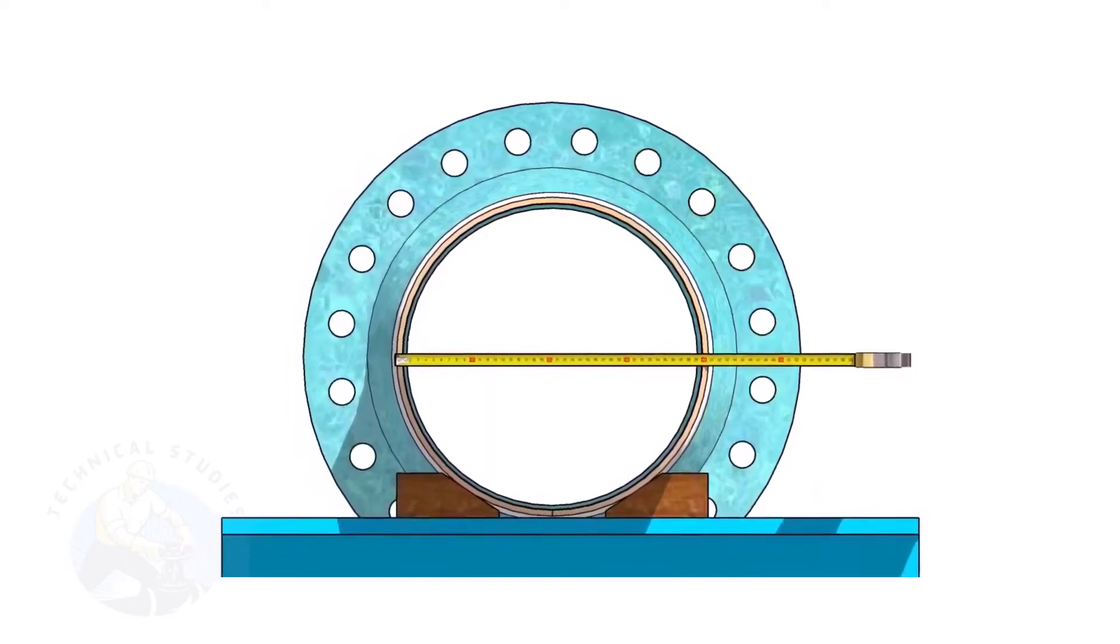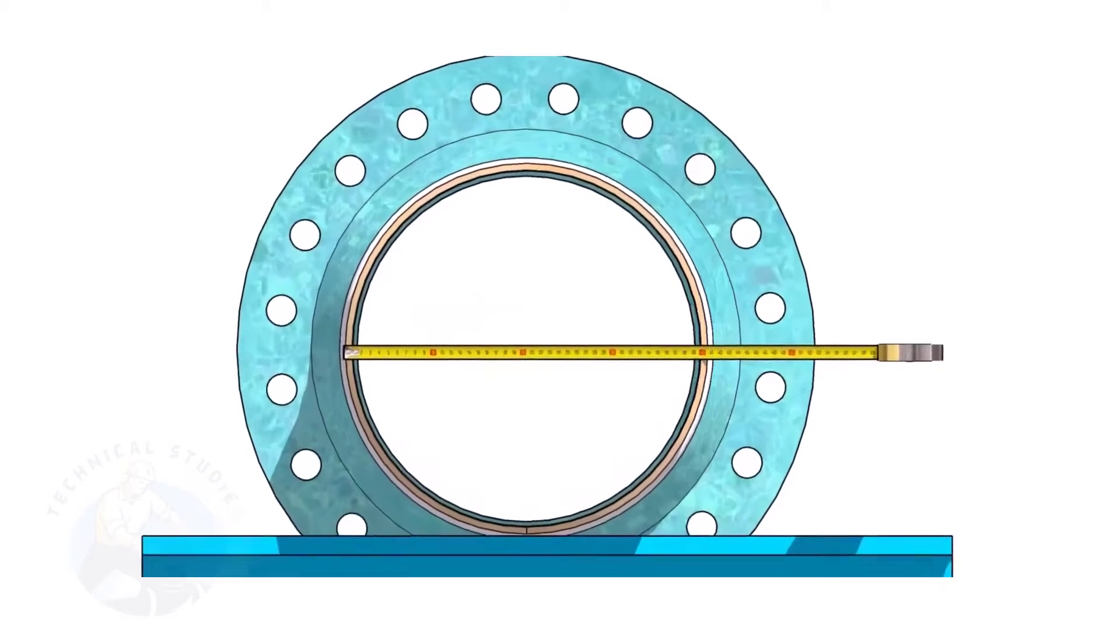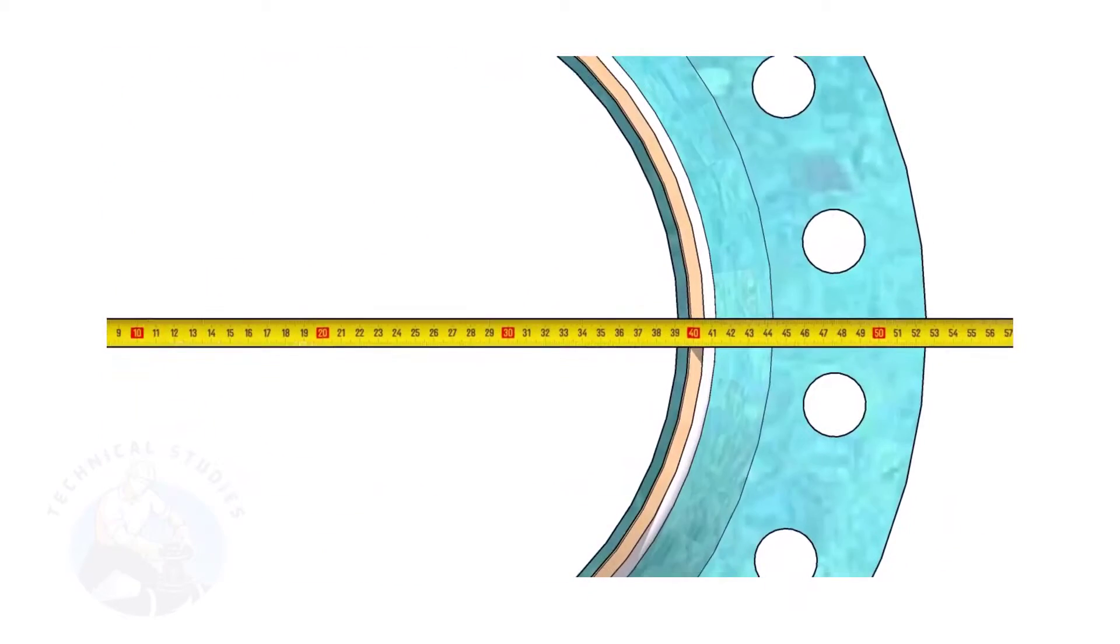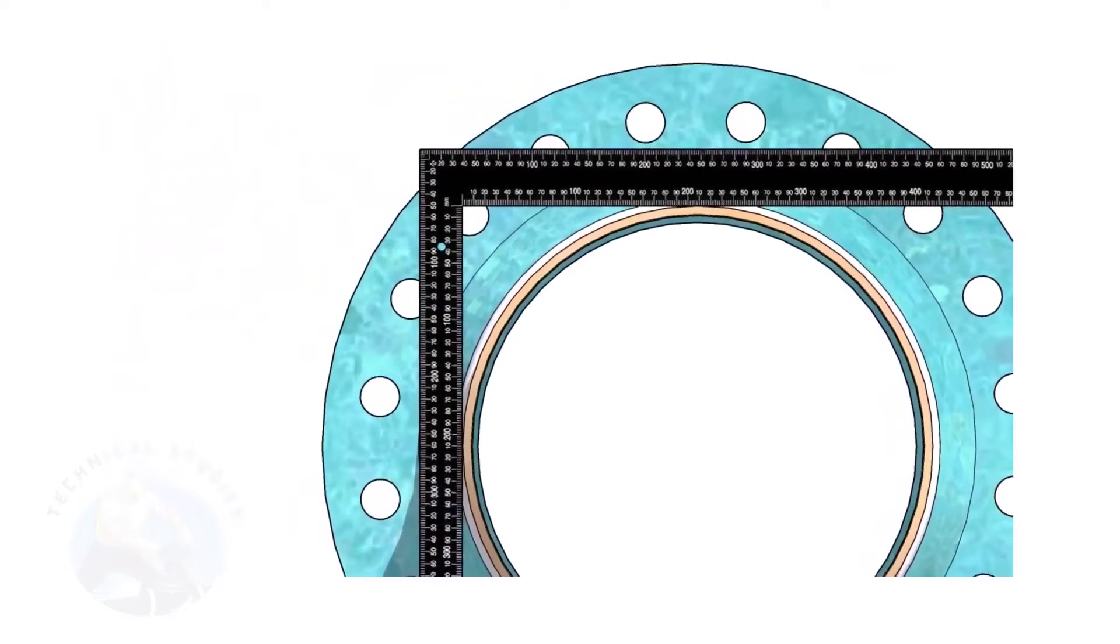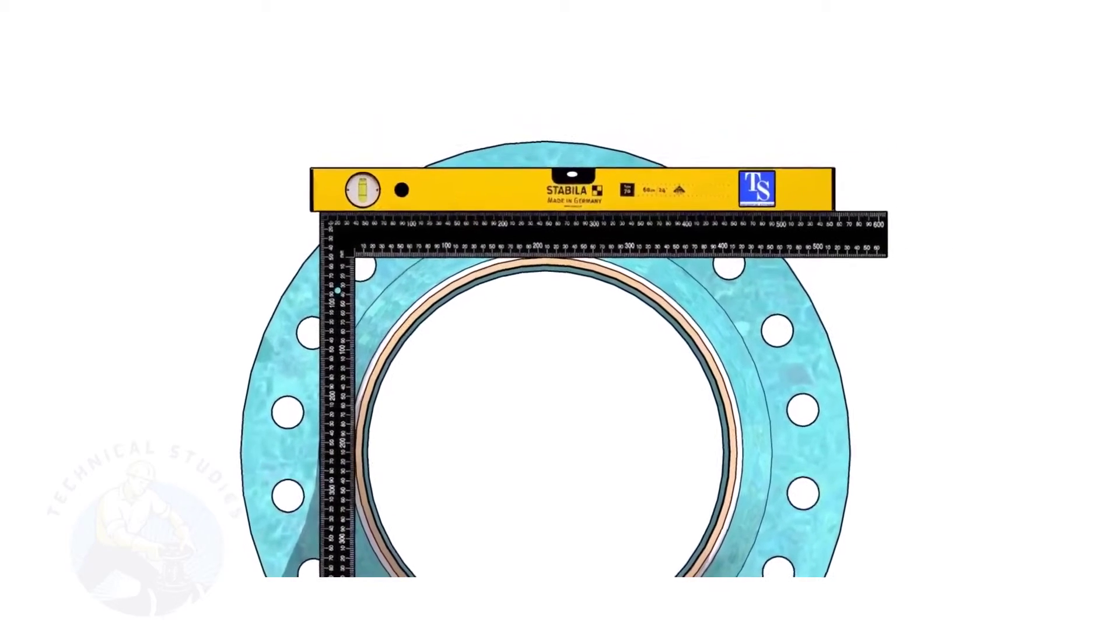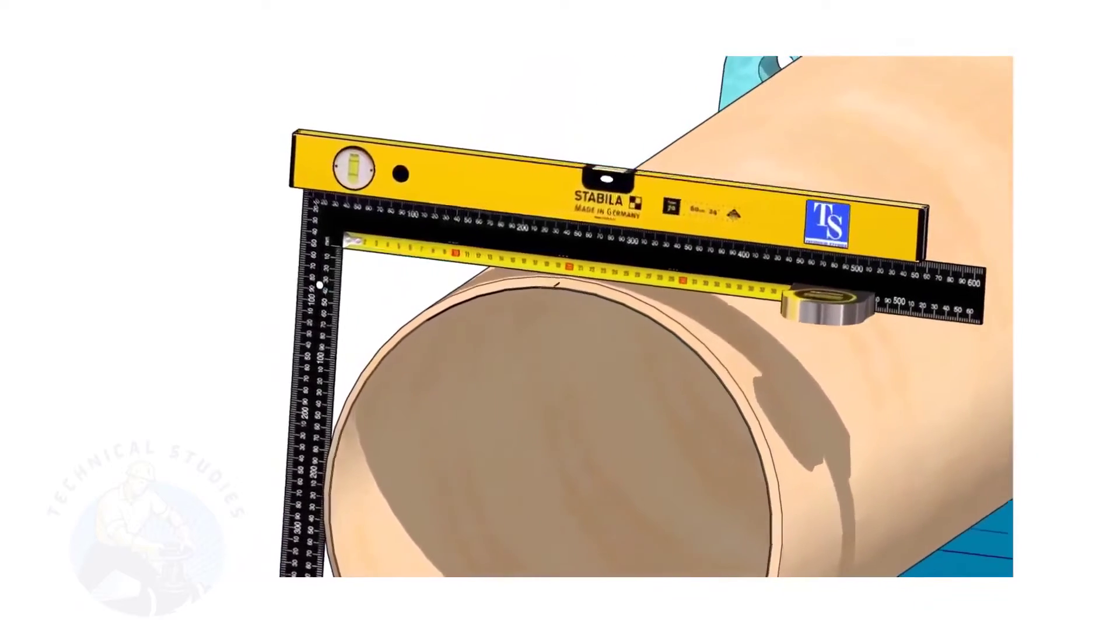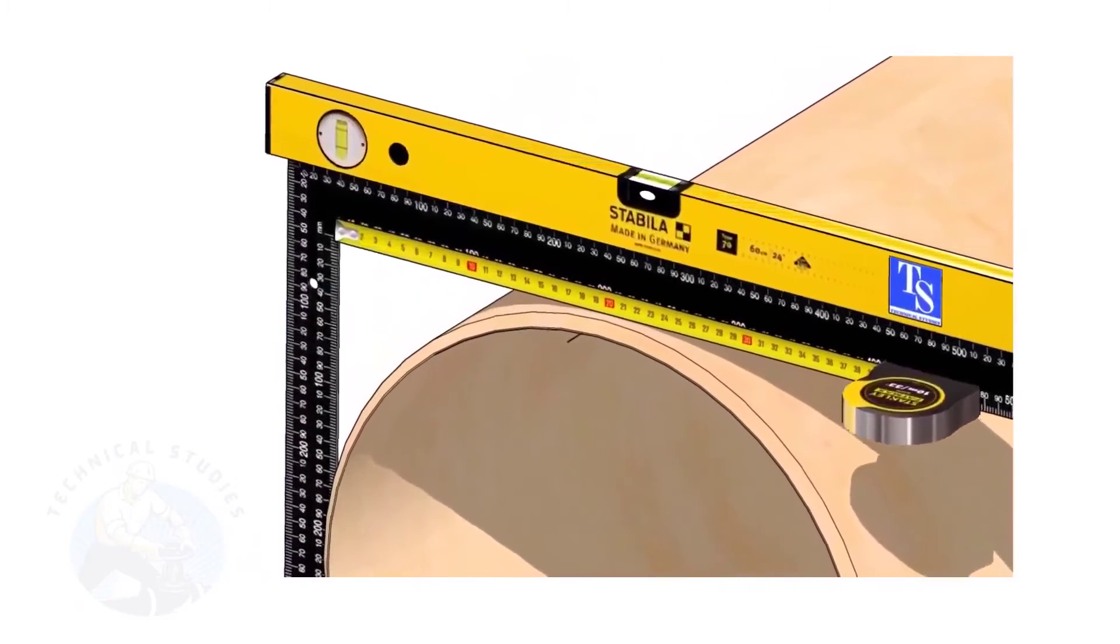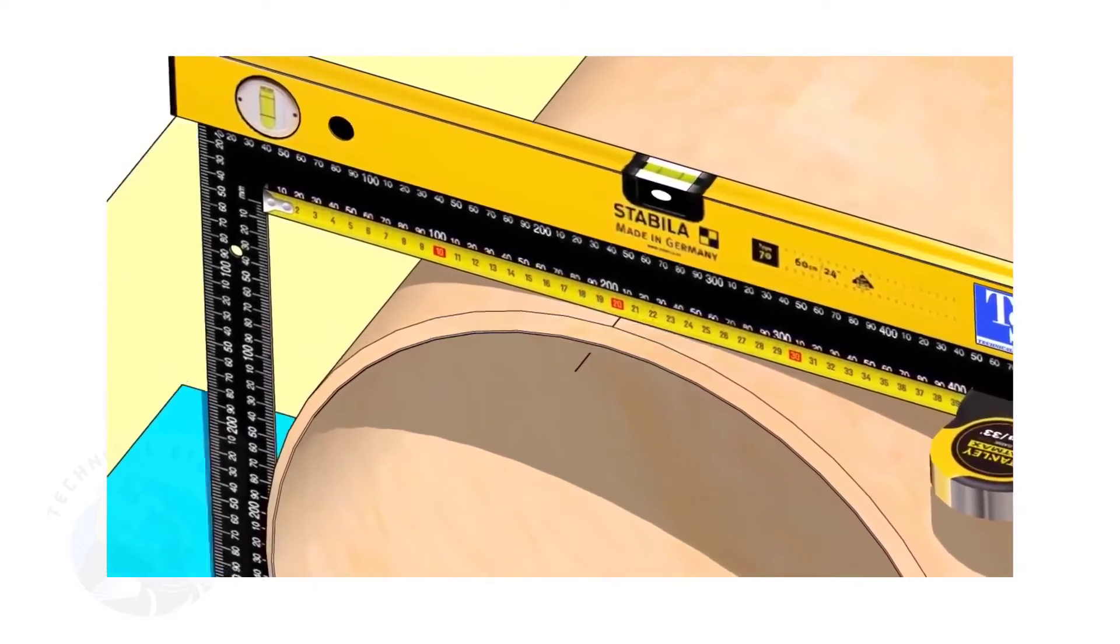Check the outer diameter of the pipe. Here, the diameter of the pipe is 406 millimeters. Hold a large right angle on the pipe as shown. Put a spirit level on the right angle and correct the top level. Mark half OD of the pipe on the top side. Here, the half OD is 203 millimeters.